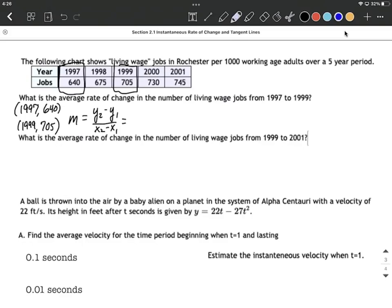I'm going to start with y2, which is 705, minus y1, 640, over 1999 minus 1997. As we do this calculation, I get 2 in the denominator and 65 in the numerator, which works out to be 32.5.